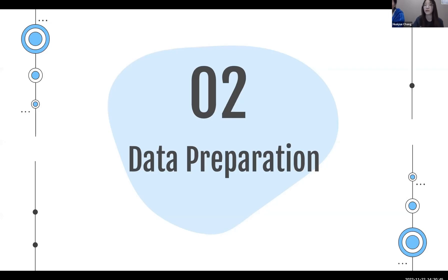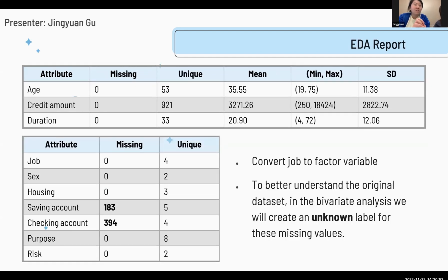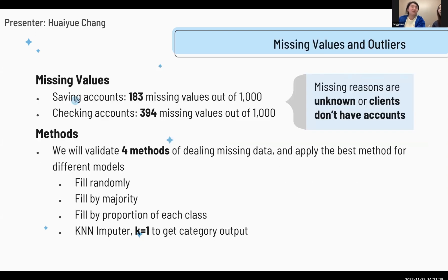Here's our data preparation and dataset description. We have 10 variables — initially four numerical variables — and from the data description, we know the job variable needs to be converted to a factor variable. After converting, we have three numerical variables and seven factors. Since we have a large number of missing values, we need to apply further methodologies. According to our data source, the missing reason is either unknown or the clients don't have such an account.